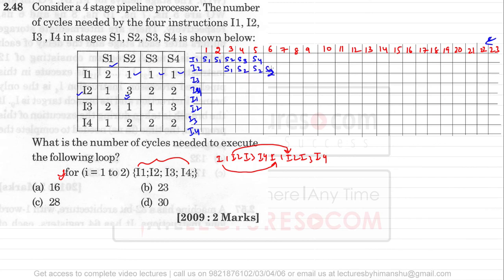After S2, I2 takes two clock cycles in S3 and then two clock cycles in S4. Now, I3 instruction takes two clock cycles in stage S1. I3 cannot be placed at clock cycle 3 or 4 because S1 is occupied by I2 at cycle 3. That is why I3 must wait.